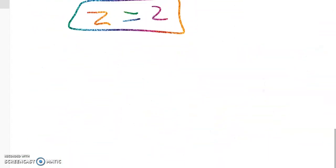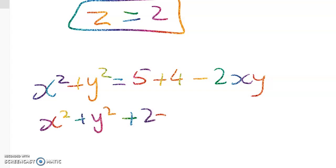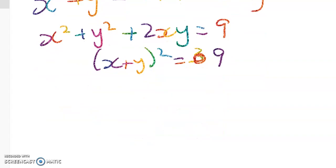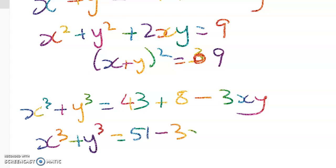In equation 2 with z = 2 we get x² + y² = 5 + 4 − 2xy, giving x² + 2xy + y² = 9, or (x + y)² = 9, which equals 3 squared — so that's not new information. Moving on to equation 3 with z = 2: x³ + y³ = 43 + 8 − 3xy, so x³ + y³ = 51 − 3xy.